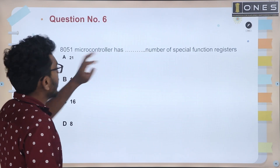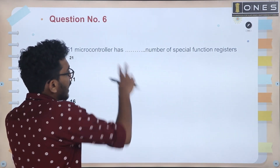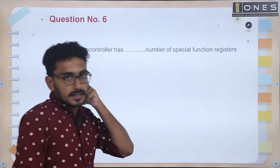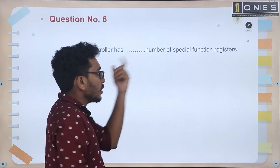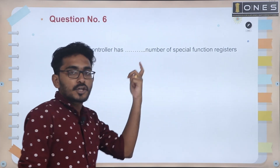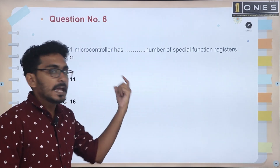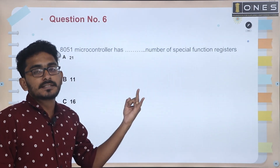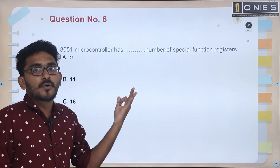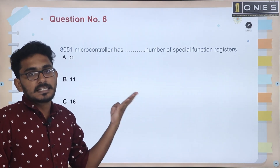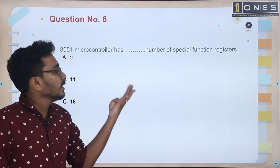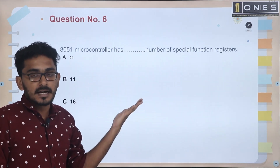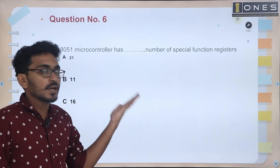Next question: the 8051 microcontroller has how many special function registers? The special function registers include the accumulator A, B register, stack pointer, data pointer (DPTR), and program counter.